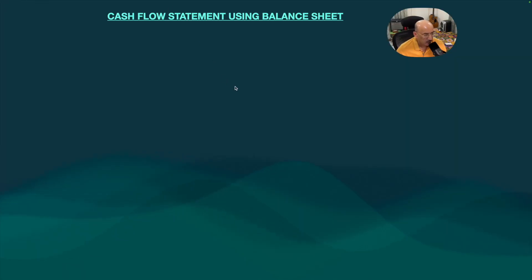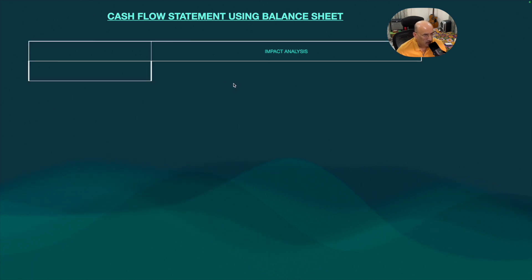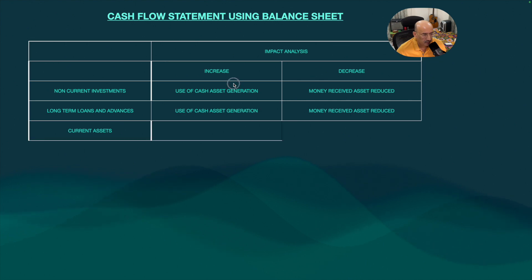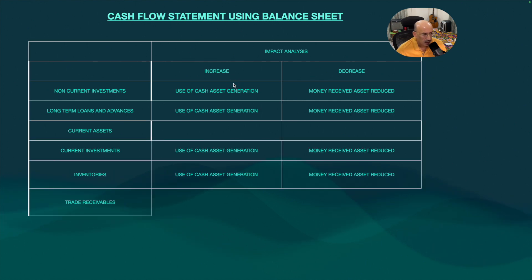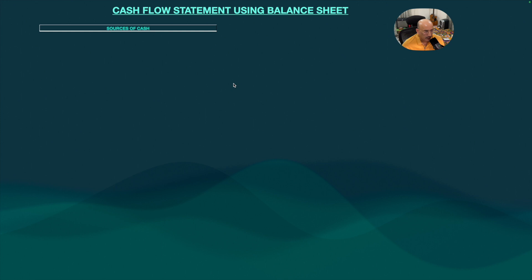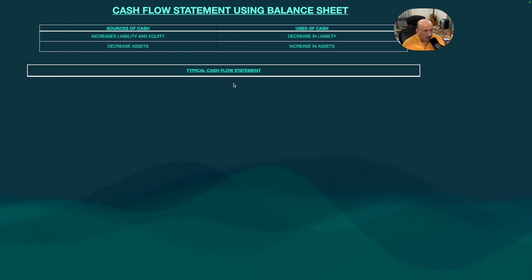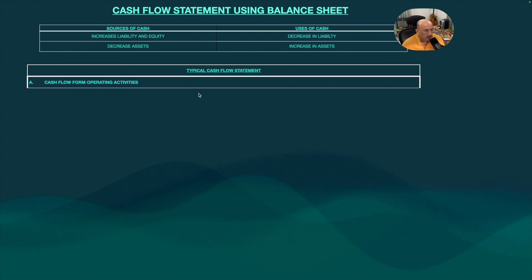Now we will have a look at how a typical cash flow statement looks like. This is a typical cash flow statement. First is the cash flow from operating activities, which we will see in detail.